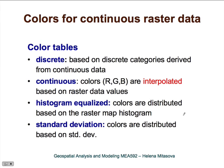Continuous raster data are a little more complicated. With discrete data, we had a limited number of classes needing color assignment. But with continuous data, we can have a million different values in our map. One approach is discretization — we classify the million values into a smaller number of discrete categories, such as 15 or 20, and then assign colors the same way as for discrete maps. However, we lose some information because we have reduced the number of values represented in the map.